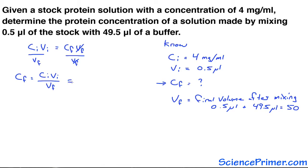With the equation arranged properly, the numbers can be put in, making the problem we have to solve. Cf equals 4 mg per mil times 0.5 microliters divided by 50 microliters.